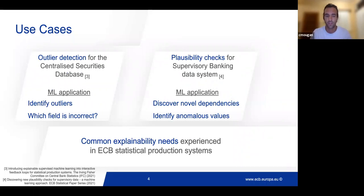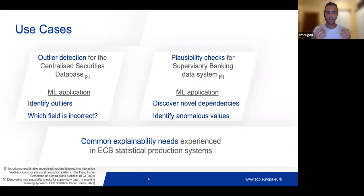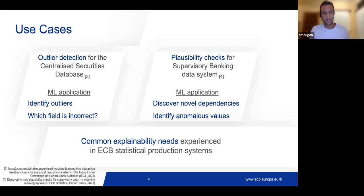The first use case is outlier detection for the centralized securities database. The centralized securities database is one of the biggest databases in the world — it contains securities for all countries of the world, and gets updated daily by private data providers and other central banks. When the data is sent to us, the first step is to identify outliers, meaning which data is correct. Once we identify outliers, we need to identify which field is incorrect and make actionable knowledge to correct the data and ensure it is of the highest quality.